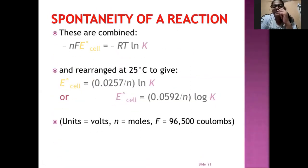These are combined as minus NF E naught cell equals minus RTlnK and rearranged at 25 degrees Celsius to give E naught cell equals 0.0257 divided by n lnK or we can also say E naught cell equals 0.0592 upon n log K. Here units are volts, n equals moles and F equals 96500 coulombs.